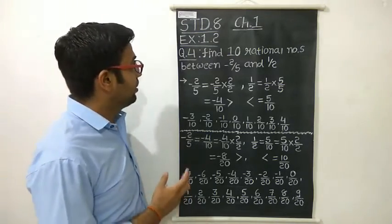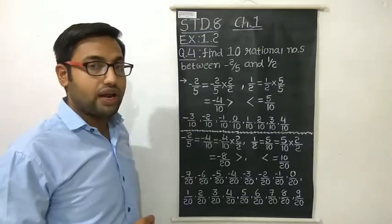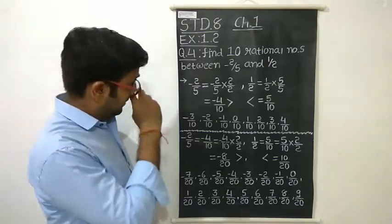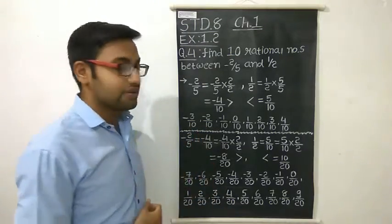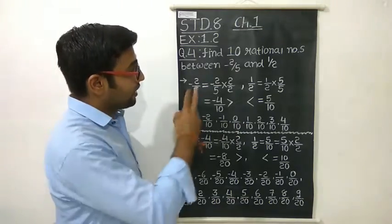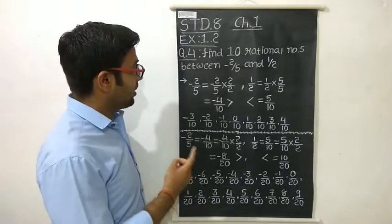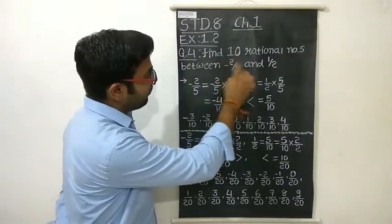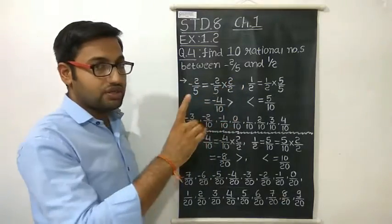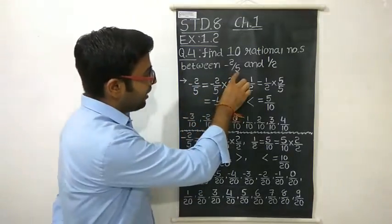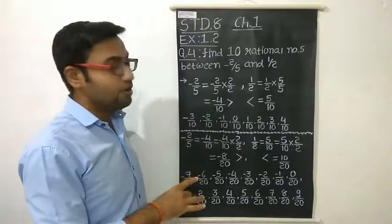The question is: find 10 rational numbers between minus 2 upon 5 and 1 upon 2. We already know there are infinitely many numbers between two rational numbers, but here we have to find only 10. So how do we find those 10 rational numbers? The given numbers are minus 2 upon 5 and 1 upon 2. The first step is to notice their denominators — here it is 5, and here it is 2. We have to make their denominators the same.